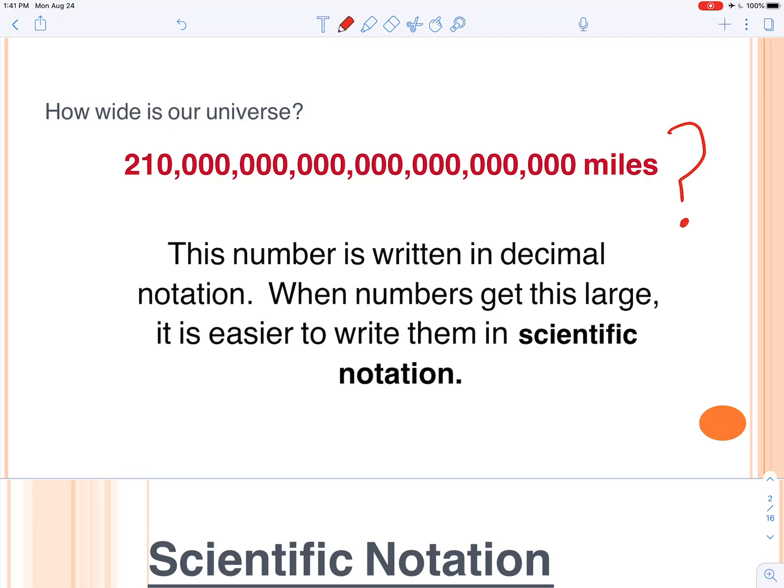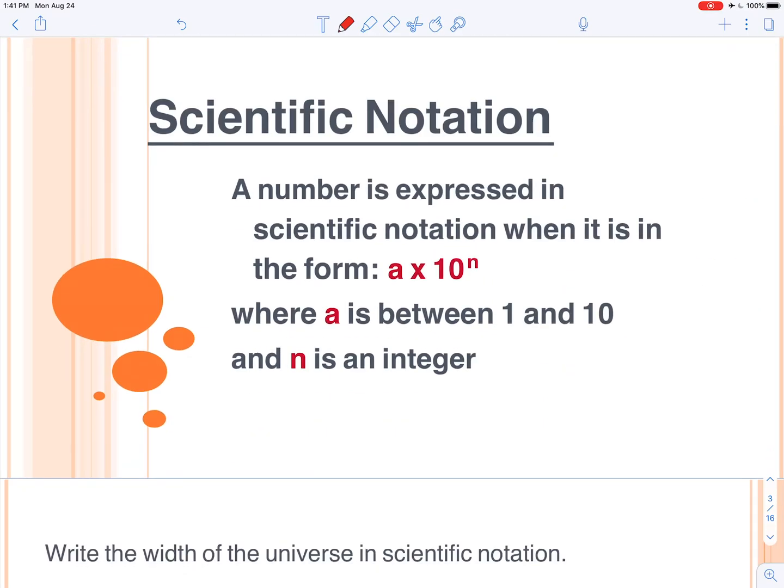This is in decimal notation. When the numbers get this big, it's easier to write them in scientific notation. I don't want to write this many zeros, so let's look at how we can shorten this. Scientific notation allows us to shorten big numbers like that. It's expressed in this format: a times 10 to the n, where a is a number between 1 and 10 and n is an integer. We'll practice this and we'll make sense of what all this means.